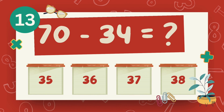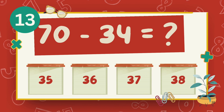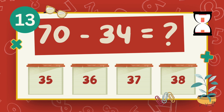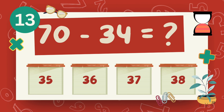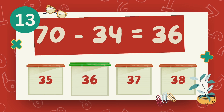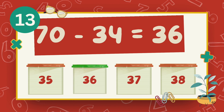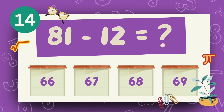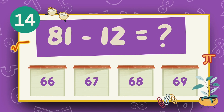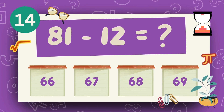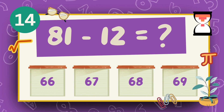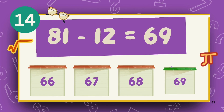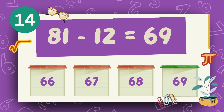What is 70 minus 34? The answer is 36. What is 81 minus 12? The answer is 69.